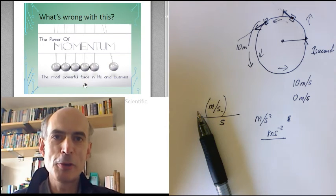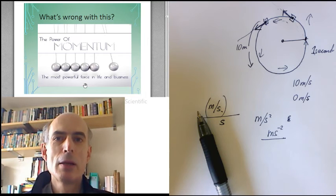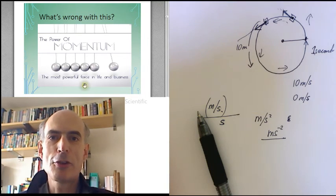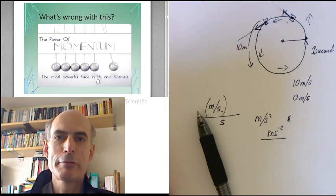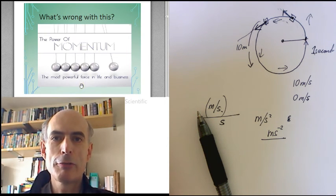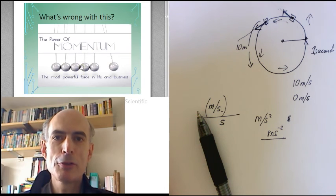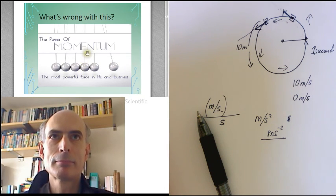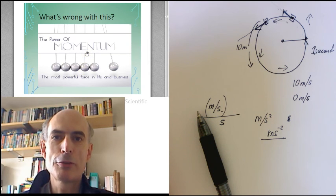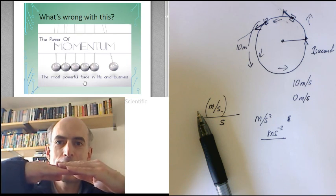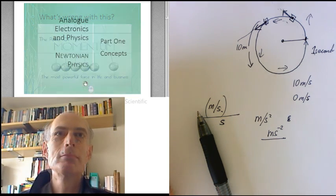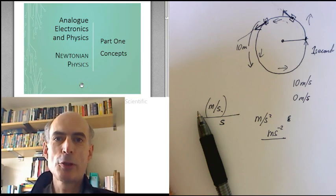Which brings us to this. One of those motivational posters that the internet is so fond of. But which annoys me, because it's just wrong. The power of momentum, the most powerful force in life and business. Momentum is not a force. Momentum is the product of mass and velocity. It's measured in kilograms meters per second. Force is measured in newtons. Force is what produces motion, what either compresses things or forces them to move. That's the end of this one. Next time we'll look at Newton's Laws of Motion.